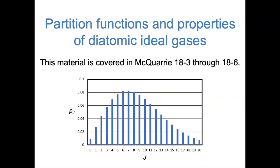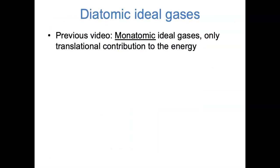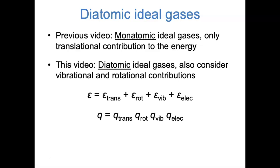Hi everybody. In this video, we're going to continue our coverage of statistical mechanics to build up the partition functions and properties of diatomic ideal gases. In the previous video, we saw that for monatomic ideal gases, we only have to think about the translational component of the energy, and therefore the translational component of the partition function and the heat capacity. But for diatomic ideal gases, we have to consider different types of motion, specifically vibrational and rotational motion.